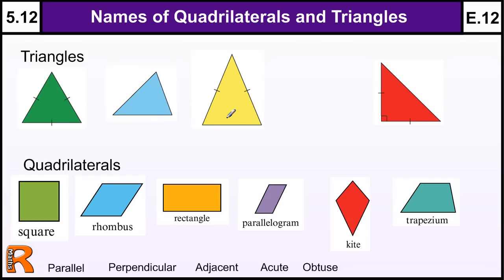Let's start with the triangles. There are three main types of triangles. We have an equilateral triangle, equilateral.